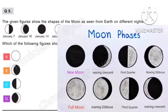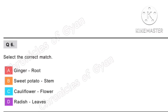Question 6. Select the correct match. Option A: Ginger is not a root — it is a stem. Option B: Sweet potato is not a stem — it is a storage root. Option C: Cauliflower is a flower, and broccoli is also a flower. Option D: Radish are not leaves — they are roots. So the correct match is option C, that is cauliflower is a flower.